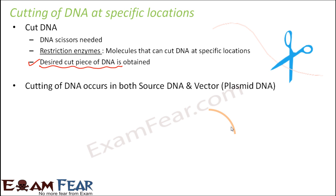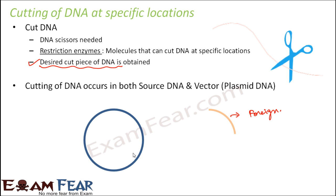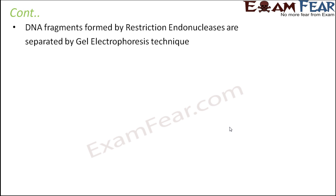We also need to cut the vector DNA. The foreign DNA — also called alien DNA — needs to combine with the vector to form the recombinant DNA, so the vector DNA must have space for it. The vector DNA, which is mostly a plasmid, also needs to be cut to create space for the foreign DNA. This cutting is also done by the same restriction endonuclease enzyme. The DNA fragments formed by restriction endonucleases are then separated by the gel electrophoresis technique.